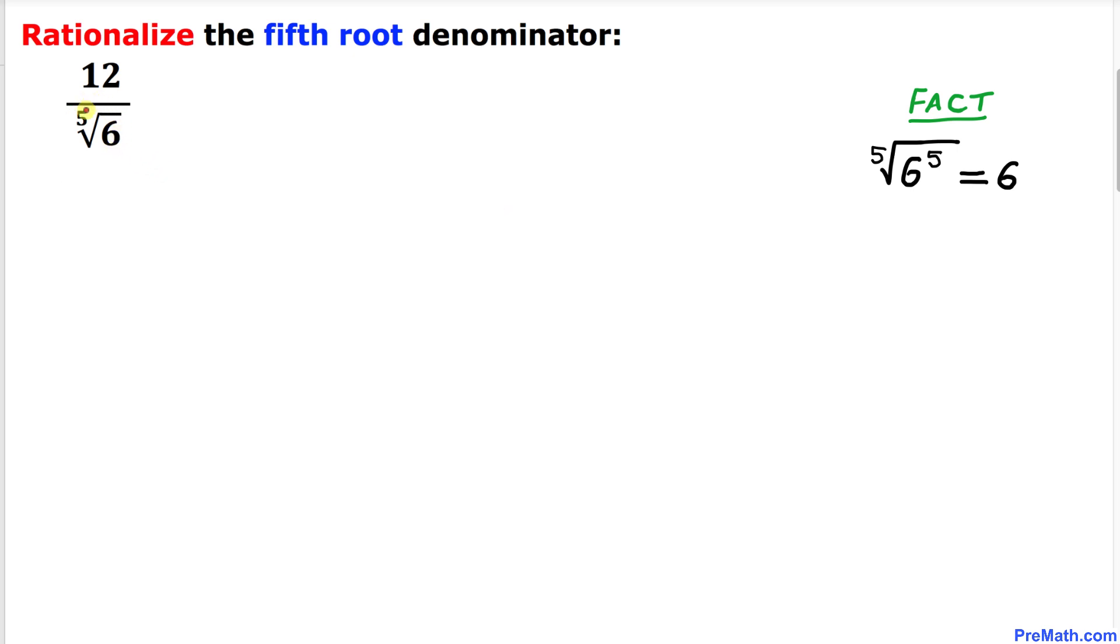Now let's focus on this denominator part only. Here I have copied it down, and we can see that inside this radical, this radicand has an exponent of 1, so this is simply 6 to the power 1.